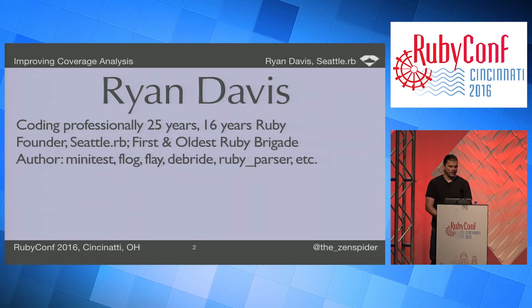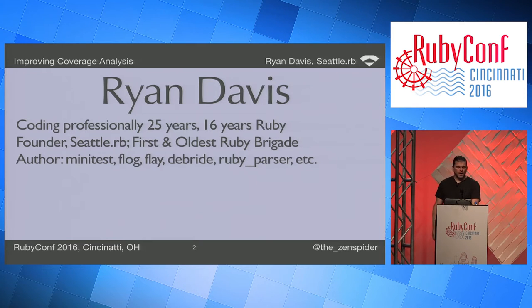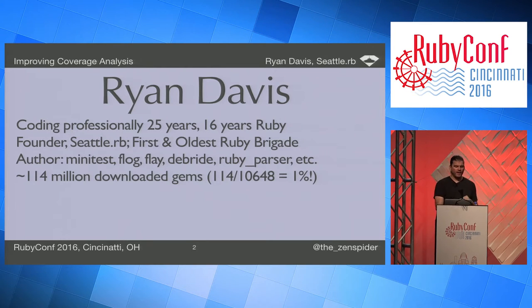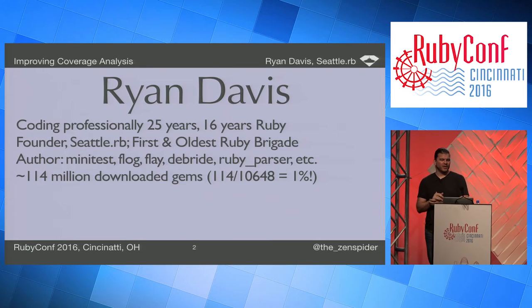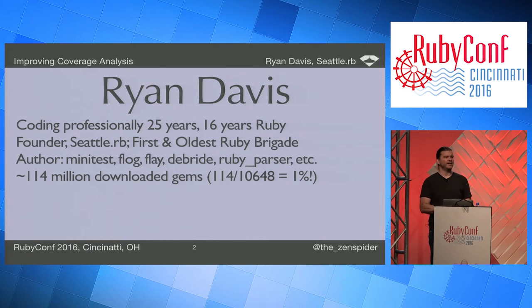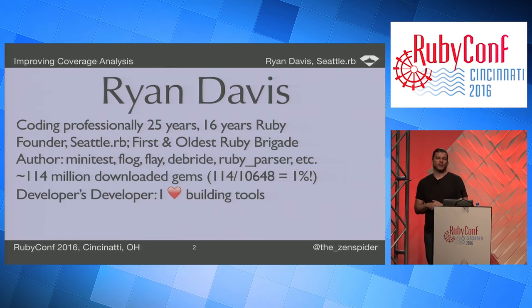I'm the author of minitest, flog, flay, debride, Ruby parser, and about 95 others. Ruby gems is reporting 10.6 billion downloads total; I'm at 114 million, making me one of the one percent. One of my newest gems, called github_score, has 298 downloads — so if you could download that and help me become one of the two percent, I'd appreciate it.